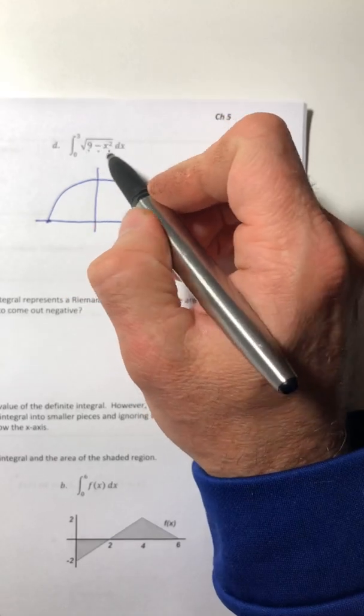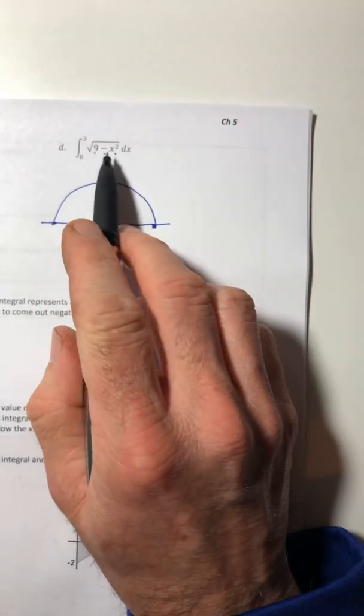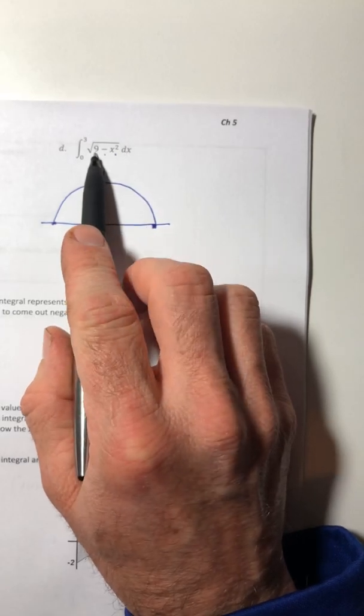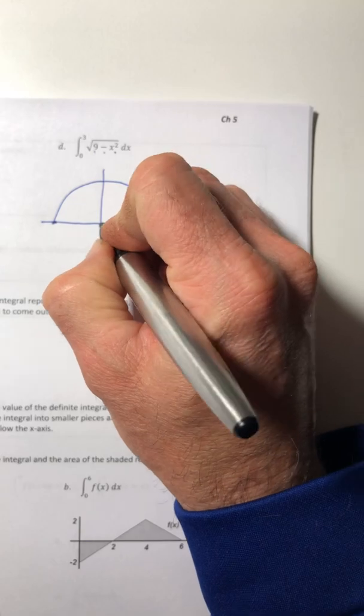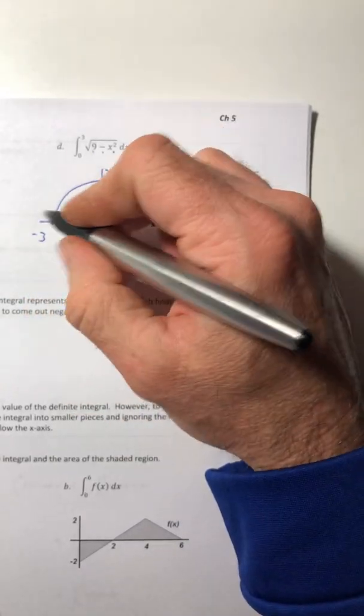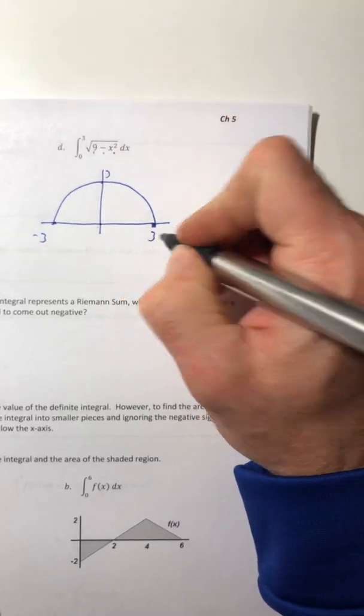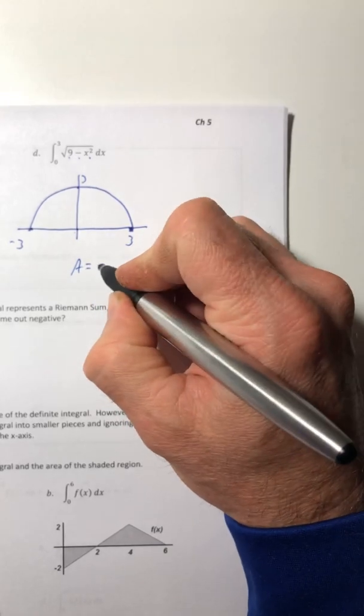So if it's a number minus x squared inside of a square root, that's always a semicircle. And then to get the radius, just square root whatever number this is. So square root of nine is three. So from the center, you're going out a distance of three. To the left, to the top, and to the right.